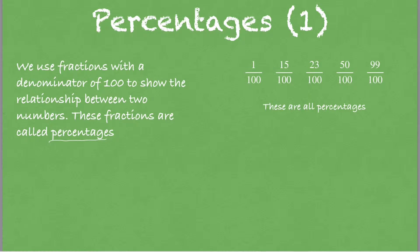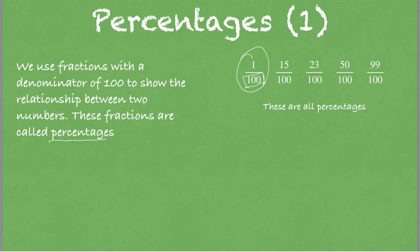If we have any fraction where the denominator is 100, it is a percentage. For example, 1 out of 100, 15 out of 100, 23 out of 100, 50 out of 100, and 29 out of 100 are all percentages because the denominators are 100.